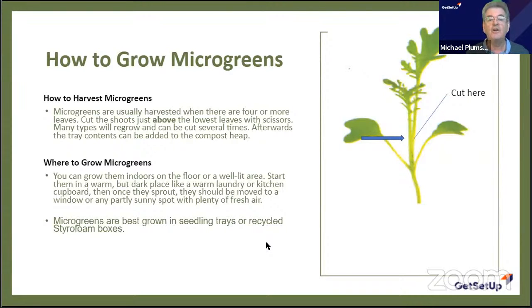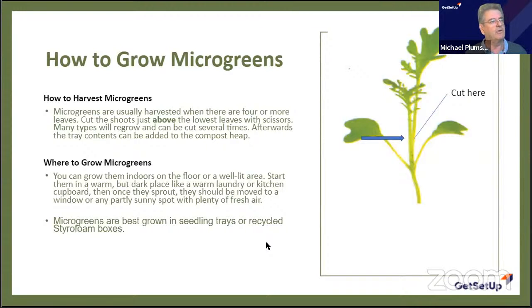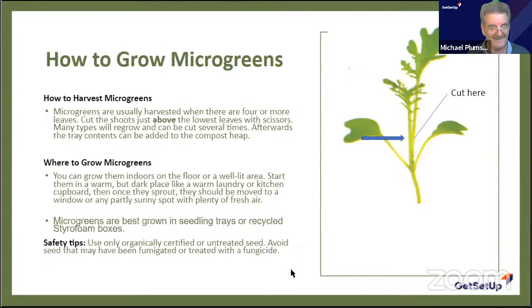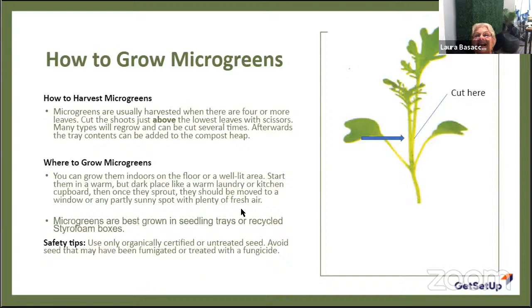You can grow microgreens in any type of container — things you'd throw away, like meat or vegetable packaging, or styrofoam. About an inch deep is enough. Use organically certified or untreated seed — that's very important. And I'll tell you a few more times: use organic or untreated seed.